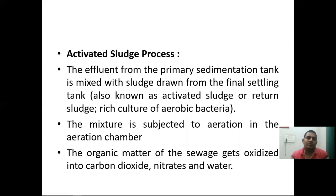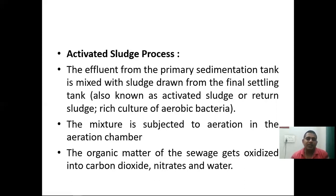Activated sludge process: the effluent from the primary sedimentation tank is mixed with sludge drawn from the final settling tank, also known as activated sludge or returned sludge, which contains a rich culture of aerobic bacteria. The mixture is subjected to aeration in the aeration chamber, where the organic matter of the sewage gets oxidized into carbon dioxide, nitrates, and water.